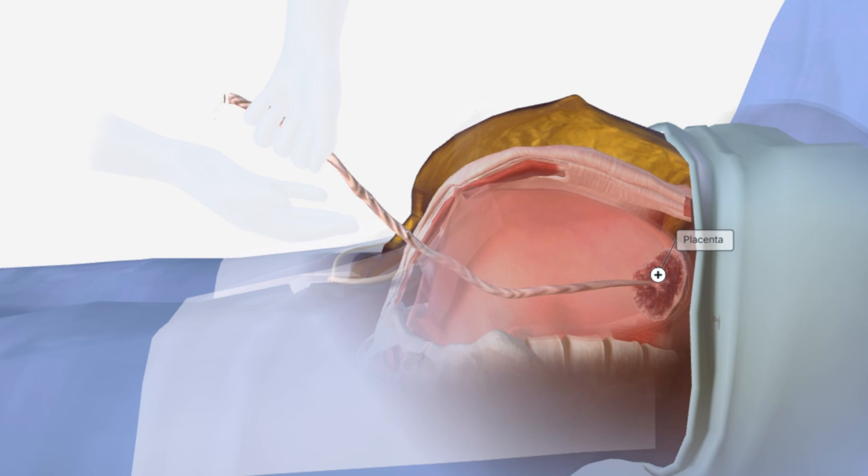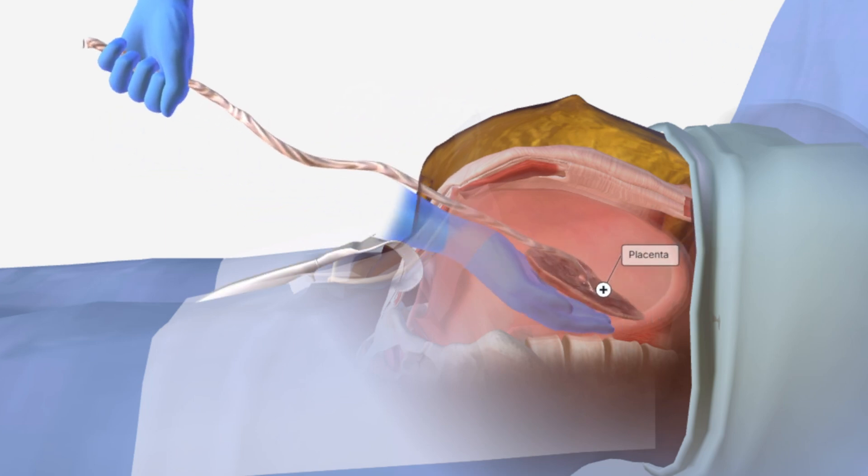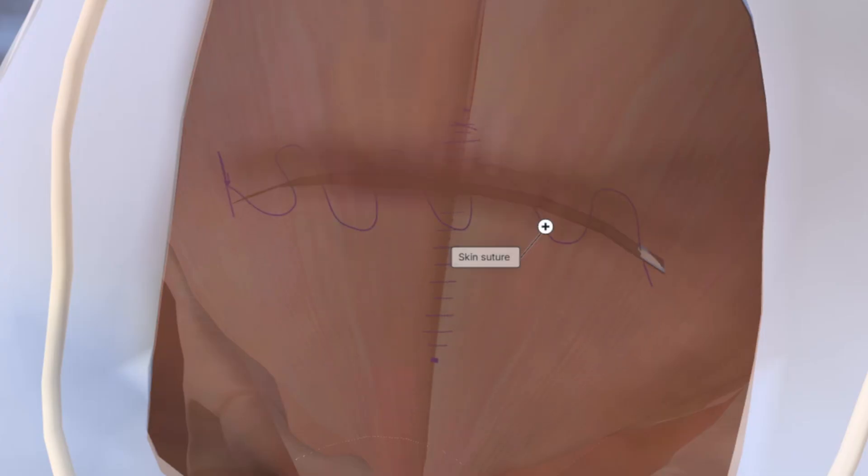Then detaching the placenta from the uterine wall. The placenta is then removed through the incision. Finally, the skin is sutured together and the procedure is complete.